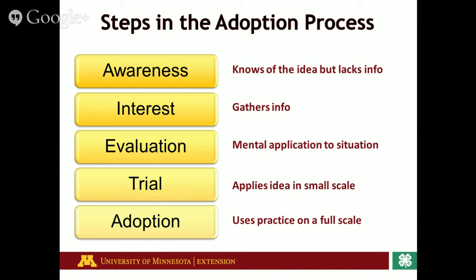That leads them to have a sparked interest and they gather more information. After they gather information, they're going to evaluate it — this is the mental application to the situation, where they determine if they want to learn more or if it's not worth their time. If they decide they want to learn more, that leads to the fourth step, the trial period, where they apply the idea in small scale. If that trial works out well, that's when they choose to adopt that practice on a full scale.